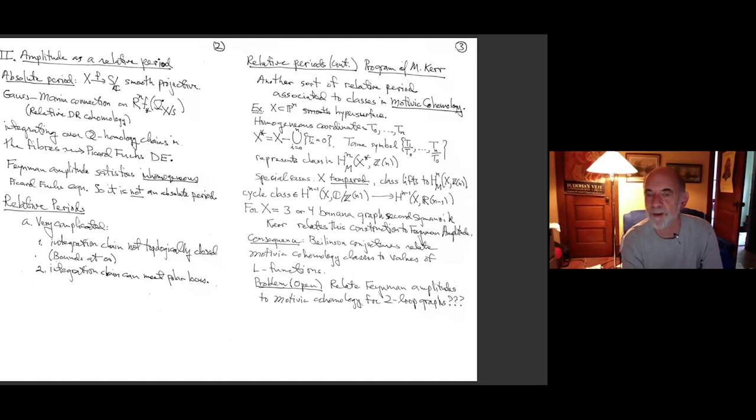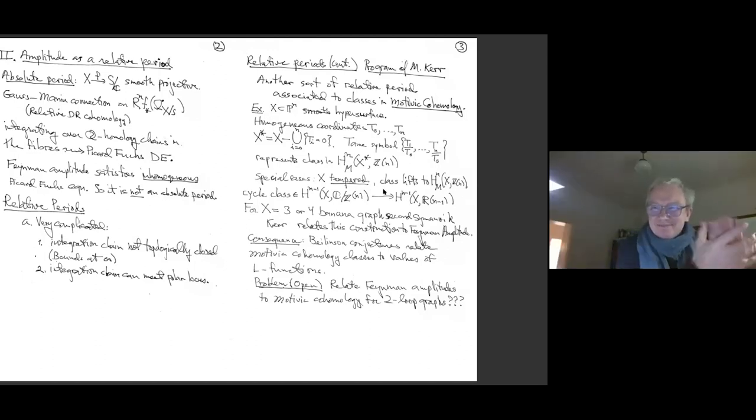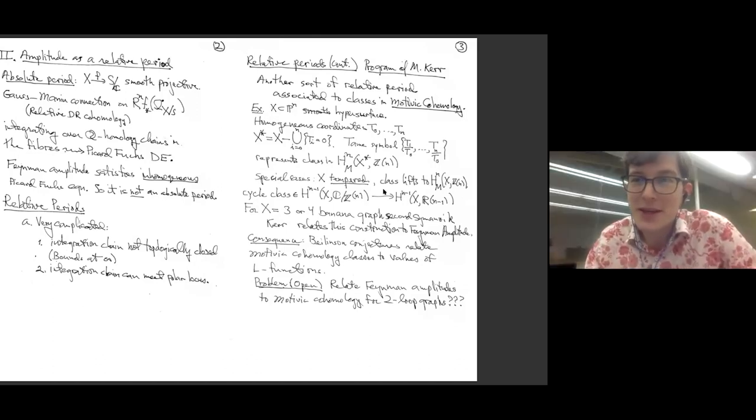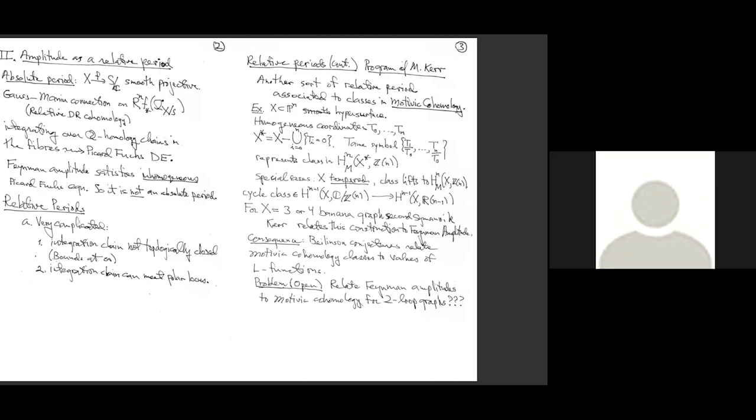And so such a tuple represents a class in the motivic cohomology of X star. The indices are n. Notice the n plus one capital T's, but I break symmetry by choosing one of them to be the denominator. And so I have n actual functions here. So I have n tuple of units. And that defines for me a class in motivic cohomology, H^n with Z(n) twist. But we want something on all of X. We don't want just something on X star. And Matt has developed a theory - they developed a notion of tempered hypersurface and tempered means that this class, which a priori is defined on X star actually lifts to the whole motivic cohomology of X. And that's an interesting business.